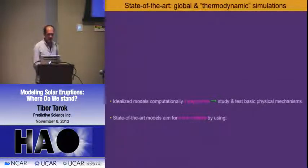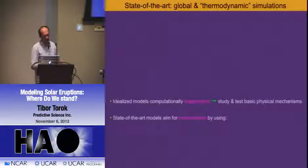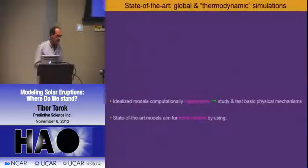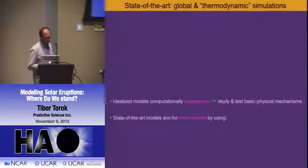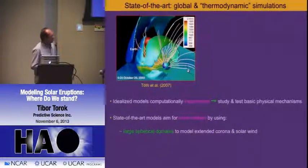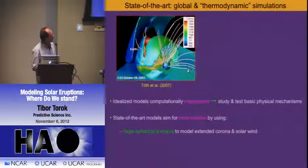These two models are still relatively idealized and simple. Still, you can get a lot out of them, and they are computationally cheap—you can even run them on a workstation—so they are very good for parametric studies of the basic physical mechanisms. There is another family of models: state-of-the-art models that try to be more realistic. Those models use large spherical domains to model the corona and even further out, up to 1 AU, and they include the solar wind. Here is one example—the Michigan Group is doing this—with really big grids modeling the whole thing out to Earth.